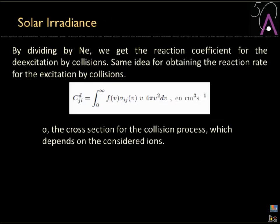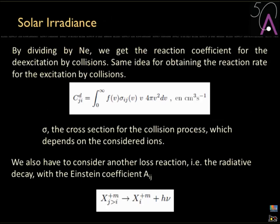From the cross section, the electron density, and the velocity distribution, we get an estimate of the total number of collisions that make an ion more or less excited. Dividing by the electron density gives the reaction coefficient. For excitation by collision we call this C(e→g), the excitation coefficient. The cross section depends only on the specific ion considered and its energy.